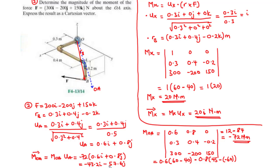Representing MOA as a Cartesian vector: MOA equals negative 72 times UA (0.6i plus 0.8j), giving negative 43.2i minus 57.6j Newton meters. That's it for today's video. Thanks for watching and see you in the next video.